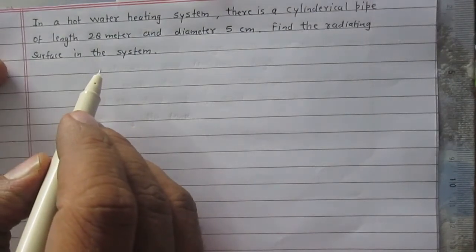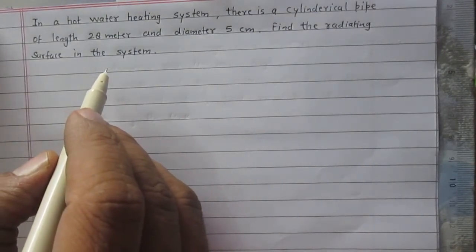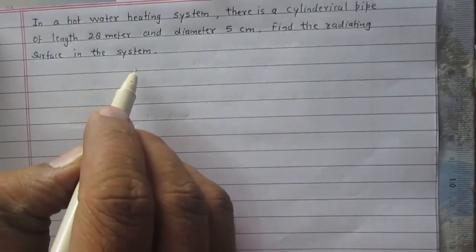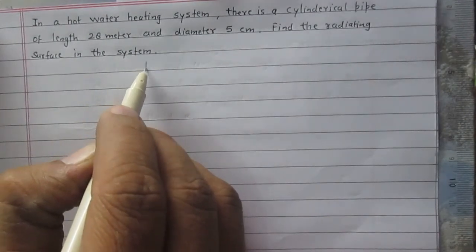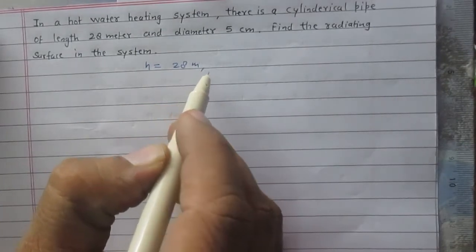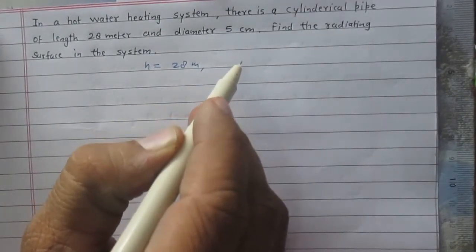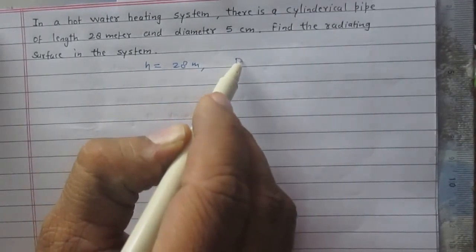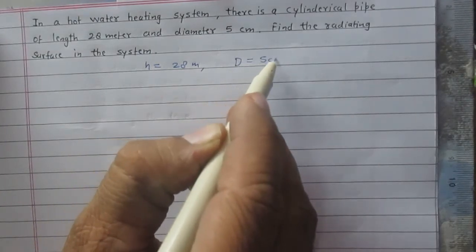The dimensions of the pipe are given to us. The length of the pipe, which is the height of the cylinder, is 28 meter, and its diameter is 5 centimeter.